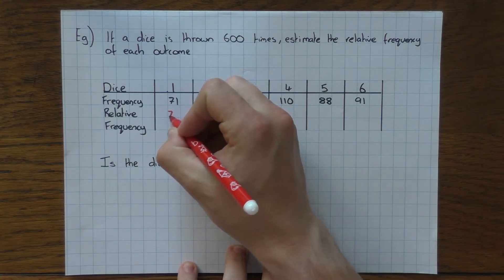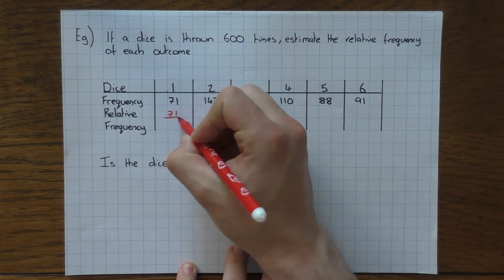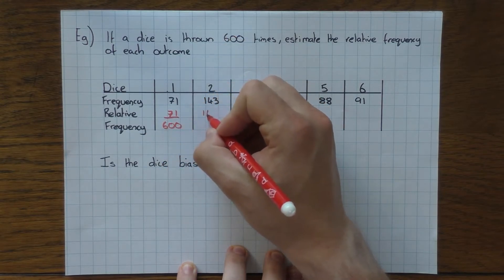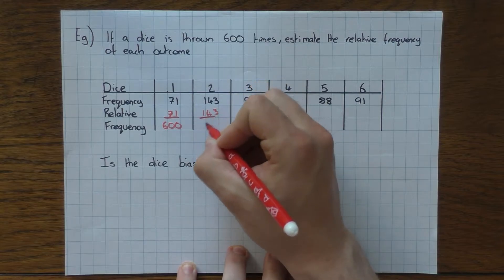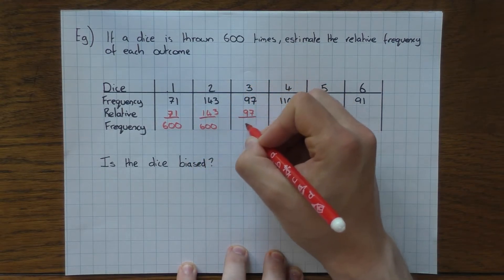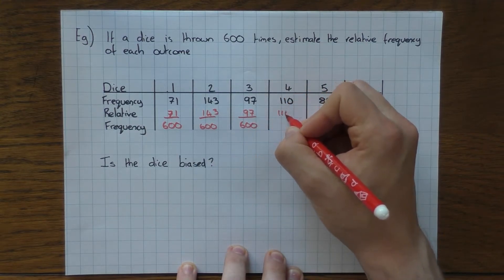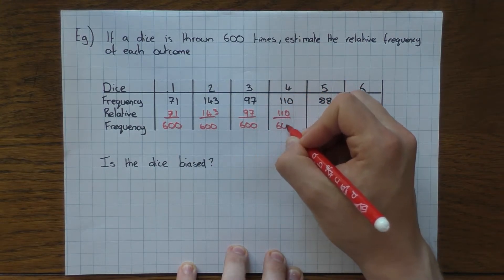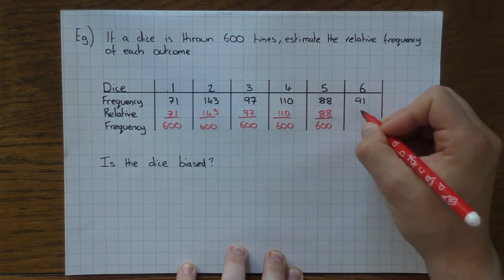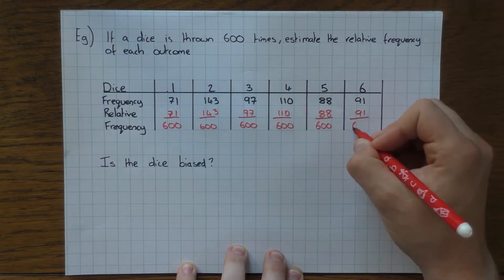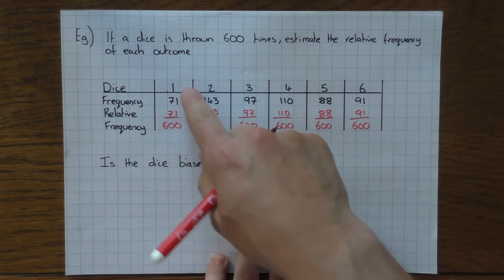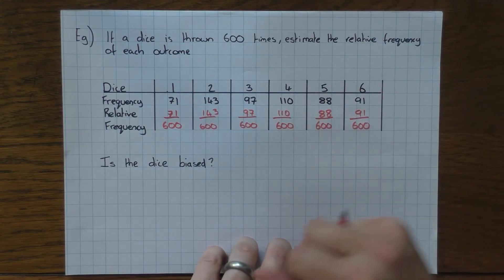So remember it's how many times it happened. So 1 happened 71 times over 600, which was the total amount of times it happened. Same thing with 2—it's 143 over 600, and then 97 over 600, 110 over 600, 88 over 600, and then finally 91 over 600. So there's all the relative frequencies for each of those. Not a problem.